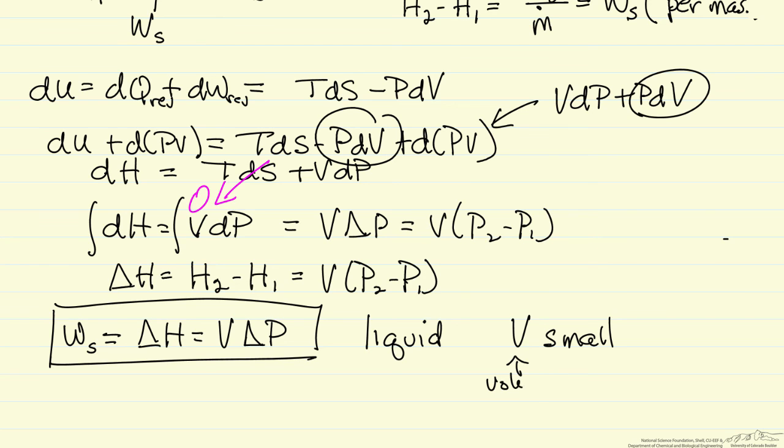This is volume per mass, so compared to a vapor, the volume per mass for a liquid is small, and so this means that temperature is not going to increase very dramatically. Delta H equals Cp delta T for a liquid. Temperature is not going to increase very much when we increase the pressure, and it does not take a large amount of work to increase the pressure for a liquid in contrast to a gas.